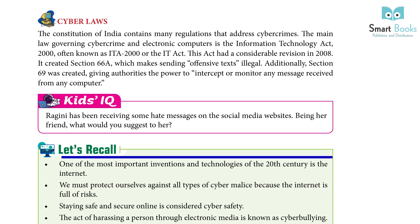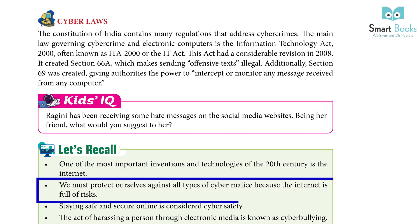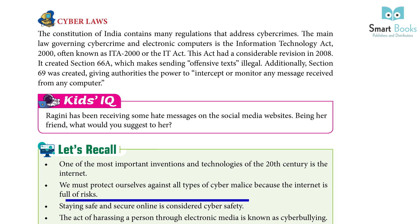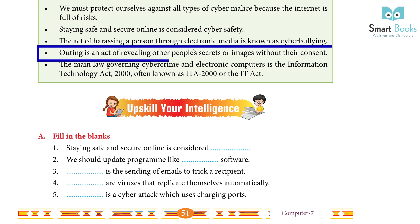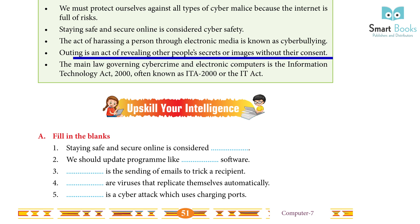Let's Recall: One of the most important inventions and technologies of the 20th century is the internet. We must protect ourselves against all types of cyber malice because the internet is full of risk. Staying safe and secure online is considered cyber safety. The act of harassing a person through electronic media is known as cyberbullying. Outing is an act of revealing other people's secrets or images without their consent. The main law governing cyber crime is the Information Technology Act 2000, often known as ITA 2000 or the IT Act.